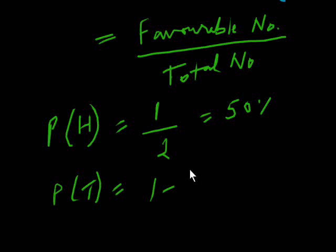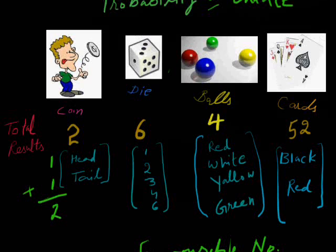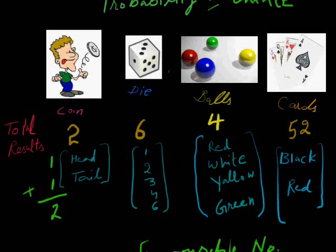There is also a 50% chance of tail. 1 minus 1/2 equals 50% chance. Like this, we can calculate the probability of throwing a die.